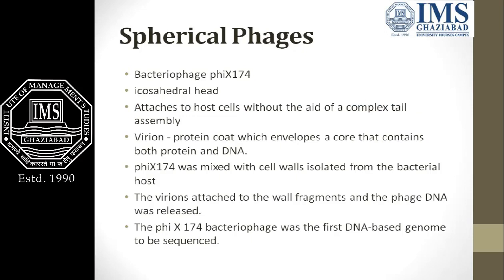Under spherical phages we study phi X174, which has an icosahedral head. It attaches to the host cell without the aid of a complex tail assembly. The virion has a protein coat that envelops a core containing both protein and DNA — only the head contains nucleic acid, which is made up of protein particles and the DNA.